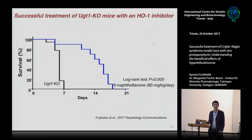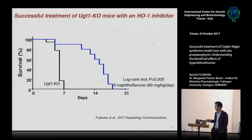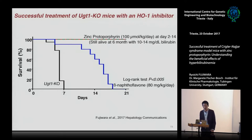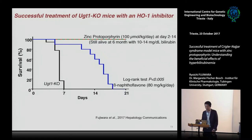These are the survival curves of the knockout mice. Without treatment, all of them died within seven days. When we treated the same knockout mice with beta-naphthoflavone, survival extended and they lived relatively longer, but they still didn't reach three weeks of their life. But when we treated the mice with zinc protoporphyrin — the inhibitor of heme oxygenase-1 — all of the mice survived. They reached three weeks and are still alive, some six months old or even longer. So we can save knockout mice with zinc protoporphyrin treatment.